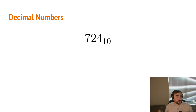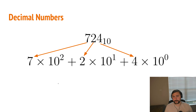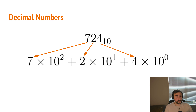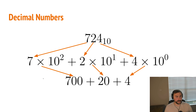This all comes from the fact that each of these values is multiplied by our base raised to some power, starting from 0 all the way to n minus 1, where n is the number of digits. So we can break apart 724 into a sum of products: 7 times 10 squared, plus 2 times 10 to the first, plus 4 times 10 to the 0. So 4 is in the ones place because it's multiplied by 10 to the 0, which is 1; 2 is in the tens place because it's multiplied by 10 to the 1; and 7 is in the hundreds place because it's multiplied by 10 squared. We reduce this back down and get 700 plus 20 plus 4, which is 724.